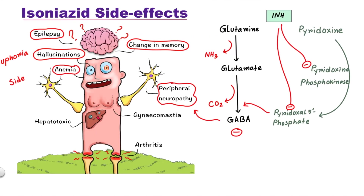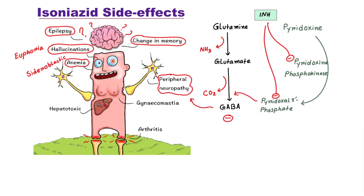Isoniazid can cause sideroblastic anemia. It can inhibit delta-aminolevulinate synthase, which leads to decreased heme synthesis and sideroblastic anemia. Pyridoxine, being a cofactor for the enzyme, can be used for treatment. Pyridoxine replacement can improve symptoms of peripheral neuropathy, neuropsychiatric side effects, and anemia as well.